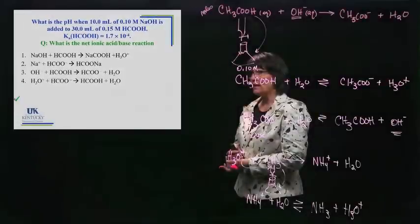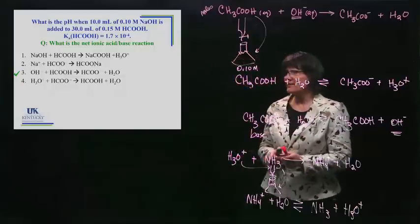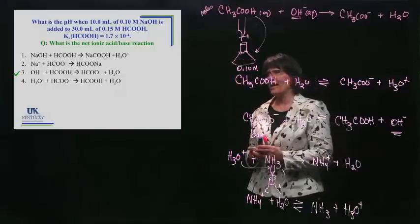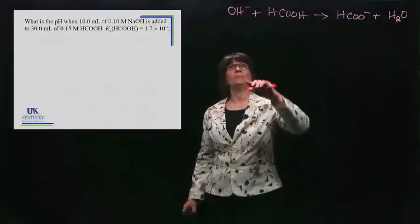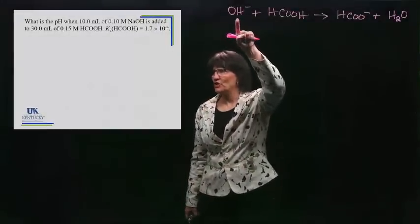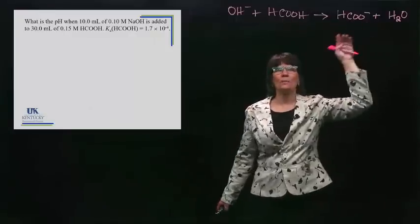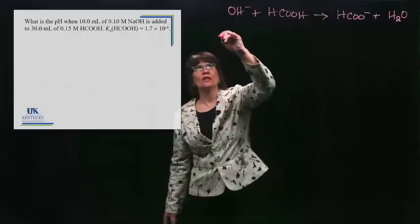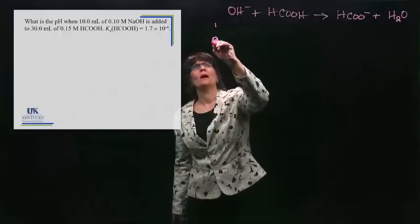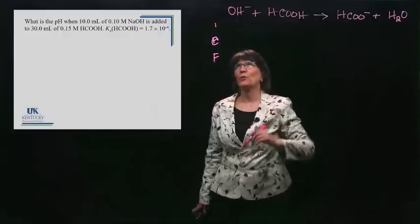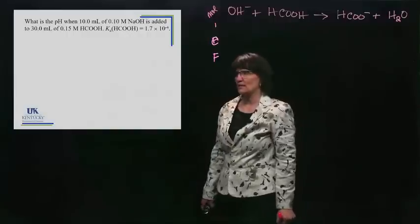The correct one is number three. We erase the board and write that reaction to start calculations. The base was strong, so we just write OH⁻. Here is the complete acid because it's weak. We do our proton swap — that's the first step. Students may have a 90% understanding of this stuff, but if they can't do that first step, they'll be lost. ICF table — we plug in moles.